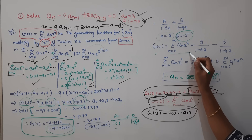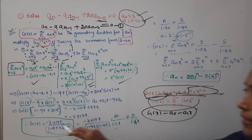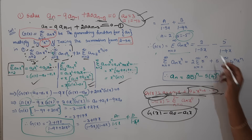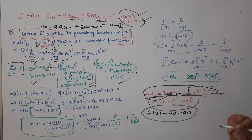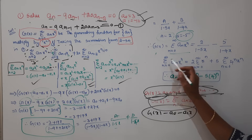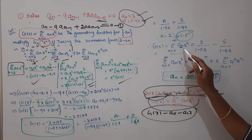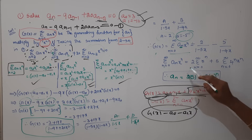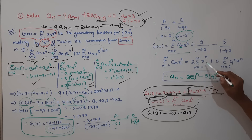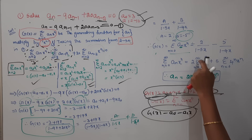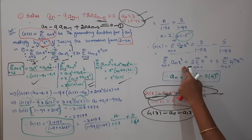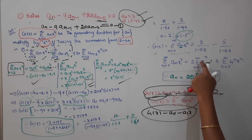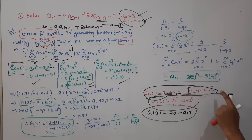Now I have A and B values. Substituting, the generating function G(x) equals A over (1 minus 5x) plus B over (1 minus 4x). Using the generating function definition — 1 over (1 minus rx) equals the summation from n equals 0 to infinite of rⁿ xⁿ — we expand both terms: the summation of 5ⁿ xⁿ and the summation of 4ⁿ xⁿ.